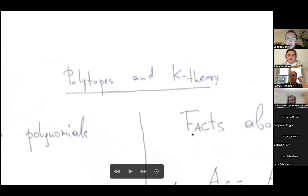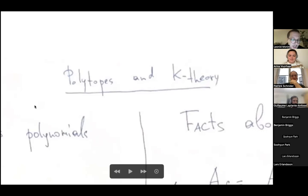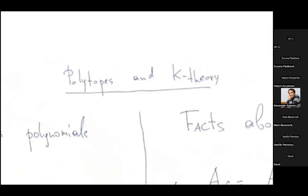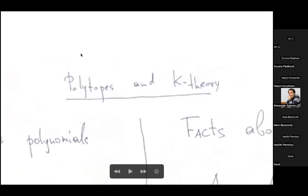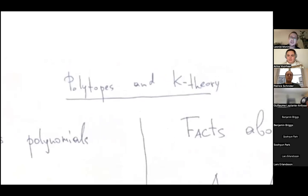I'm going to talk about polytopes and K-theory. I'll try to start from the beginning, but if you feel I'm too fast or too slow, please ask questions or tell me. The first half of the talk will be preliminary, but in the second half I'll talk about work with Jenny Smirnov, which is very much in progress, so some things I'll formulate not in full generality.